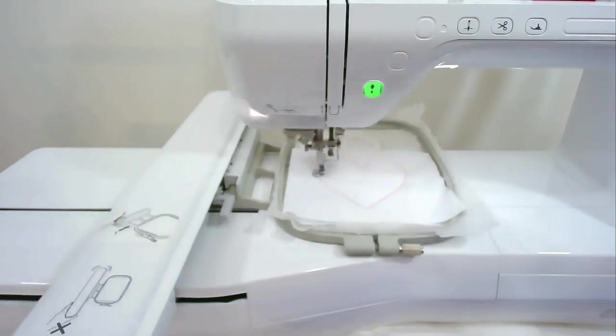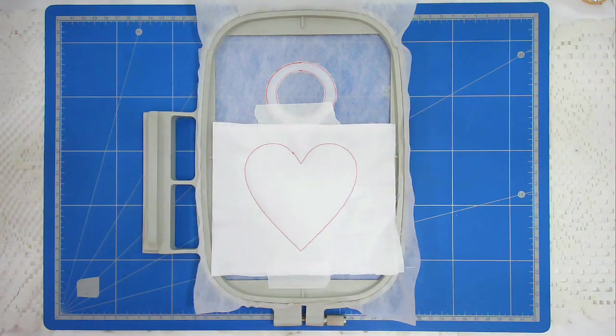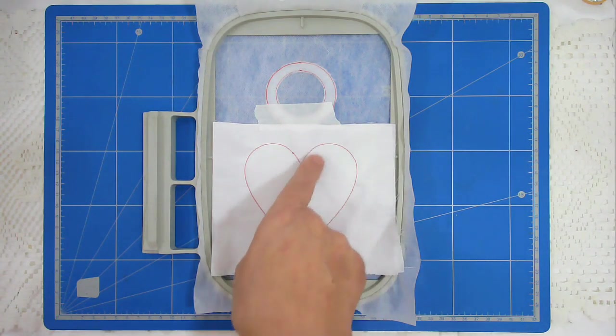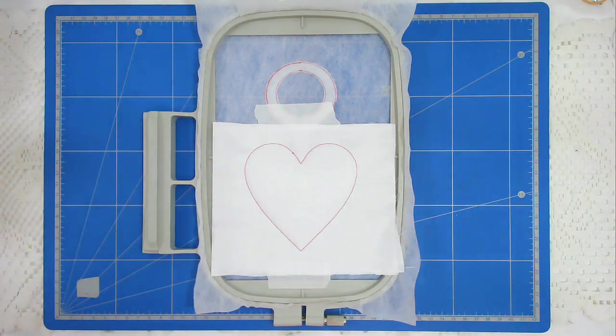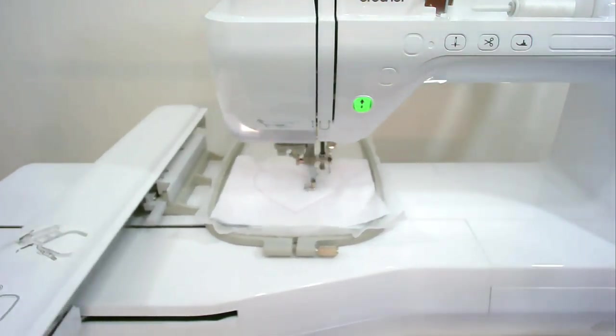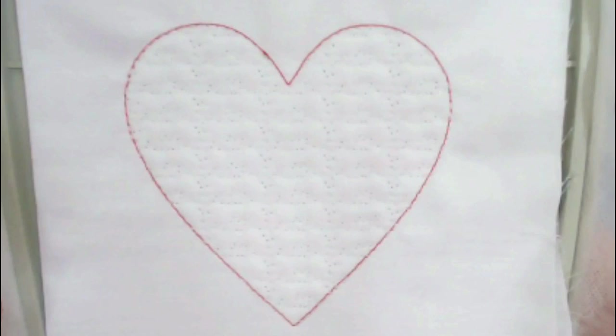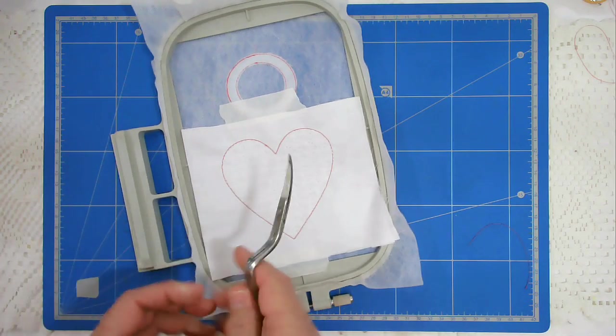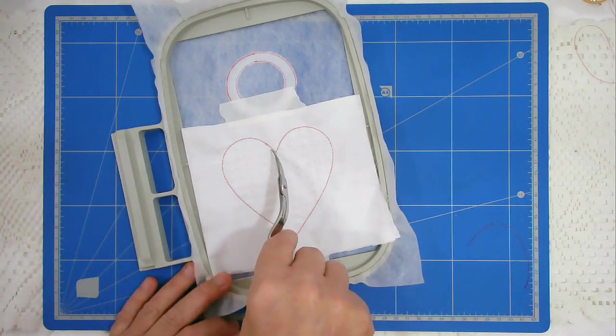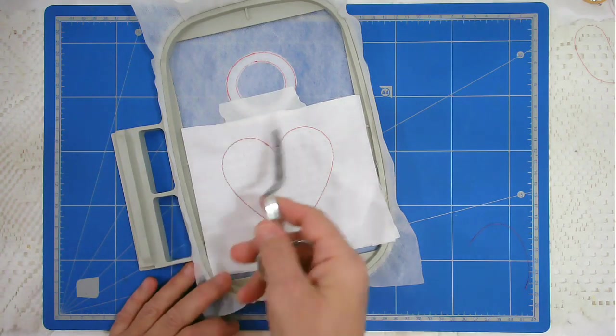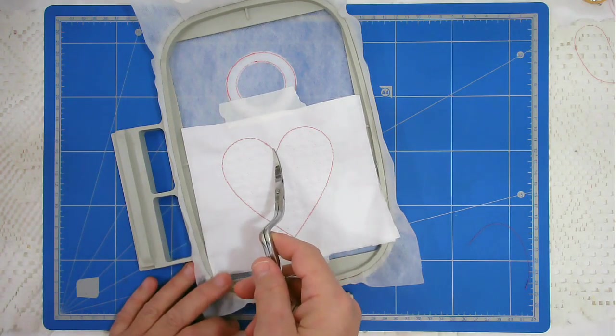I'm going to change my thread to white and stitch round number 4, which is going to do the quilting in the heart area. So that's the quilting done. It's like a little heart monitor with a heart all the way over it. I'm going to trim up around here so that when I come to put the next fabric on, it's not going to get in the way and make it bulky.